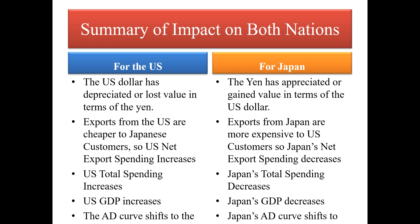A couple of important warnings: don't get hung up on whether a currency gains or loses value — it's the 'in terms of' that matters. When the dollar loses value in terms of the yen, American products are cheaper to Japanese customers, so the U.S. sells more to Japan and net export spending increases — that's good for U.S. GDP and shifts the U.S. aggregate demand curve to the right. For Japan, the yen gaining value means Japanese products are more expensive to American customers, net export spending decreases, and Japan's AD curve shifts to the left.